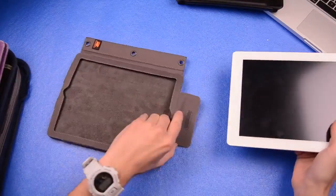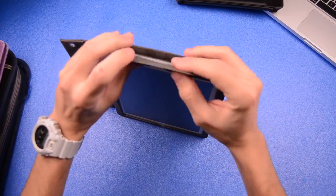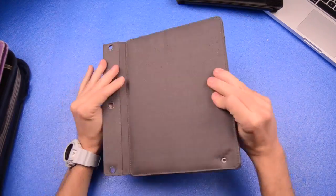Alright, so now let's install this bad boy, very simple. Let's go ahead and take your iPad, slide it down in there, take this little tab up here, fold it over, push that in and there you go, you guys have your binder pad.